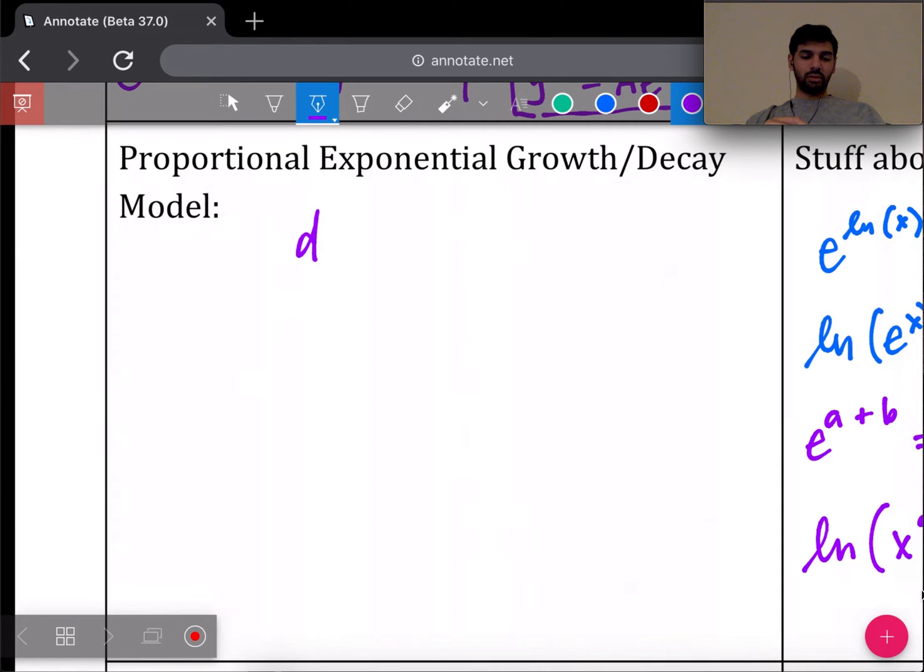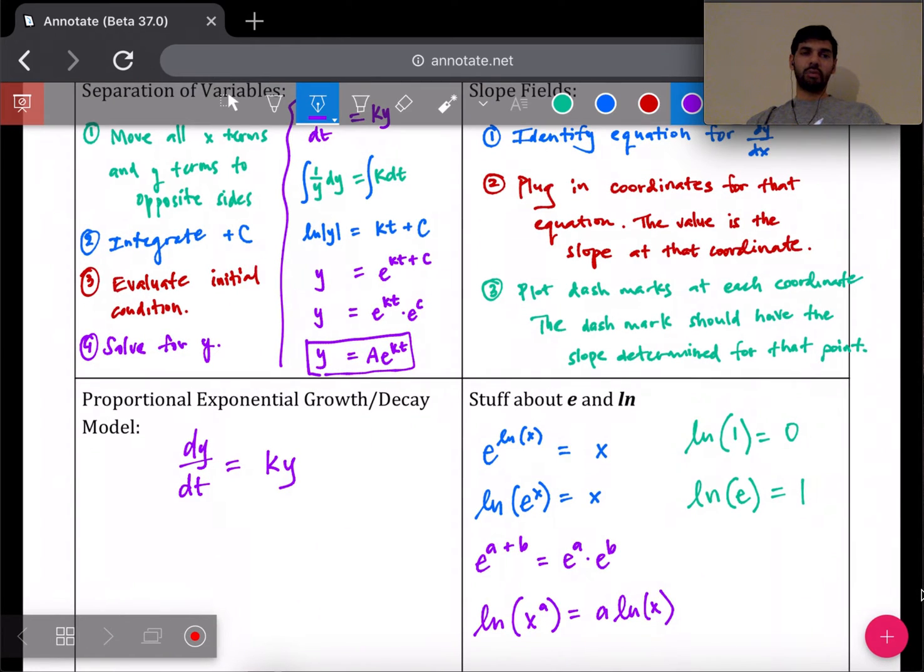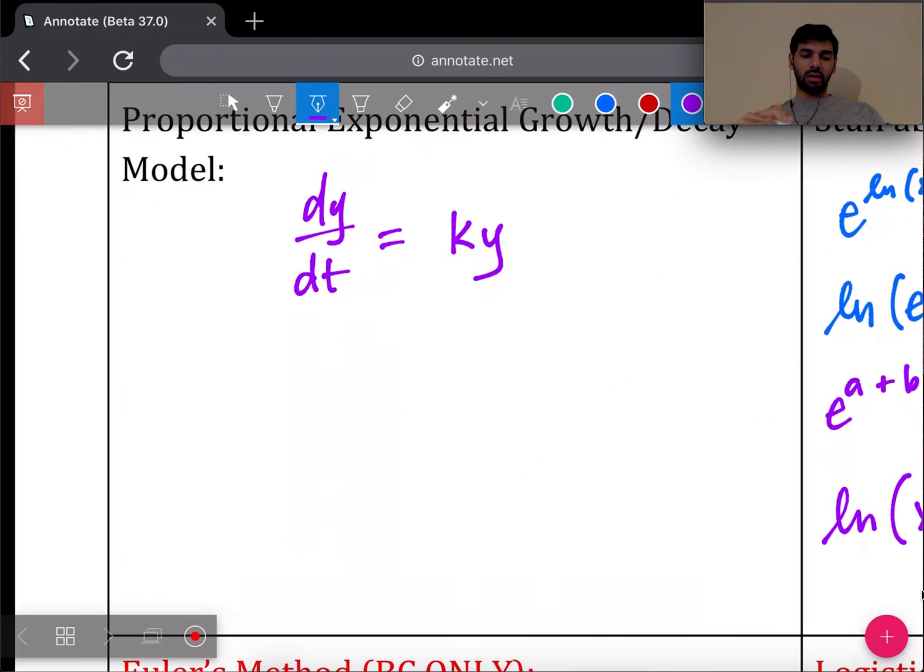This example goes hand in hand with this next box below it where it says proportional exponential growth and decay. The general differential equation is dy/dt equals k times y. That's the equation I started up with at the top of the first box.